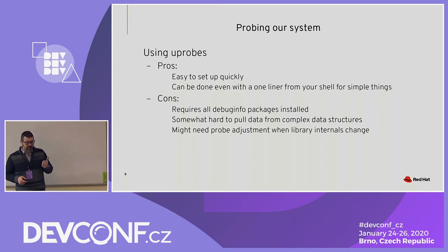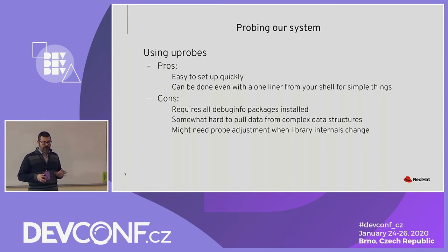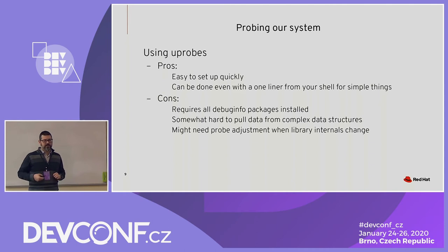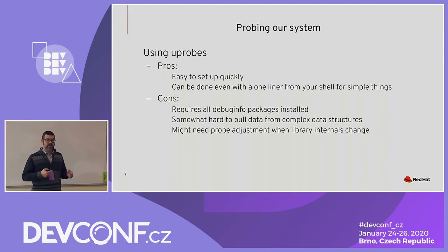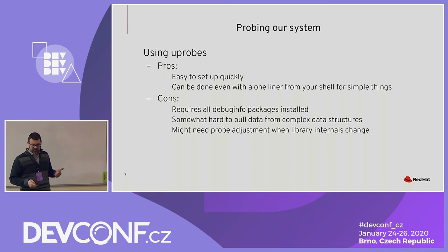What's good about UProbes: easy to set up quickly, can even do single-line BPFtrace scripts. But there are issues. First, you need to install a lot of debug info packages, because most functions you want to look at aren't directly exposed in the ELF header, and the probe can't find the function without knowing where it is. It's also hard to pull data from complex data structures — if data is hidden through many pointers, it's very annoying to extract. And whenever the code changes, you have to ensure the debug info packages are exactly the right version. Very good for one-shot use, but for something used repeatedly, it's less easy.